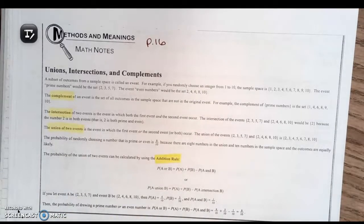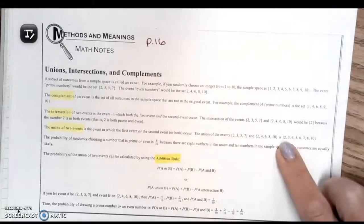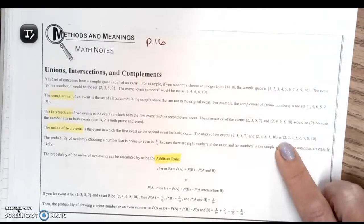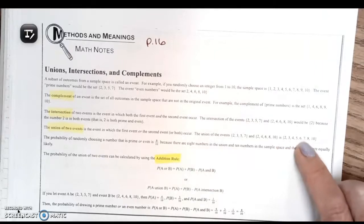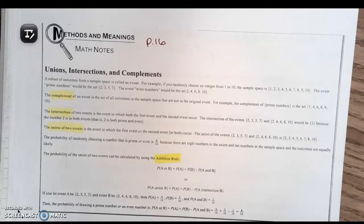The number 2 is in both events — it is both prime and even. The union of two events is the event in which the first event, the second event, or both occur. So the union of {2, 3, 5, 7} and {2, 4, 6, 8, 10} is {2, 3, 4, 5, 6, 7, 8, 10}. The probability of randomly choosing a number that is prime or even is 8 out of 10, because there are 8 numbers in the union and 10 in the sample space.